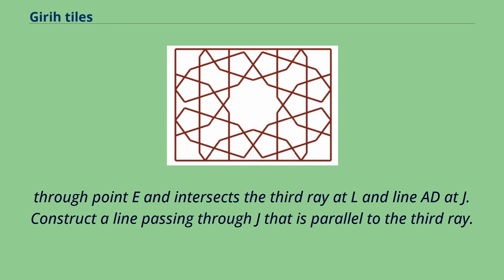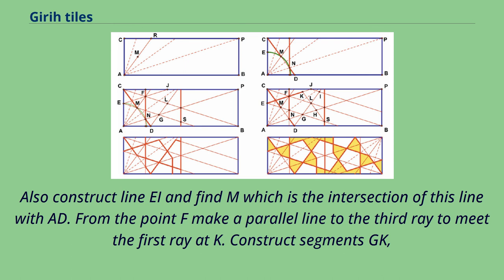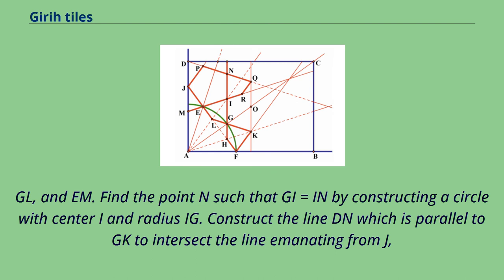Construct a line passing through J that is parallel to the third ray. Also construct line AL and find M, which is the intersection of this line with AD. From point F, make a parallel line to the third ray to meet the first ray at K. Construct segments GK, GL, and IM.